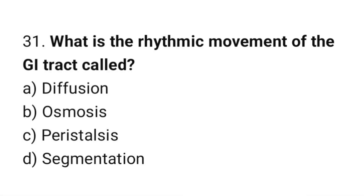Question number 31: What is the rhythmic movement of the GI tract called? The correct answer is C: Peristalsis.